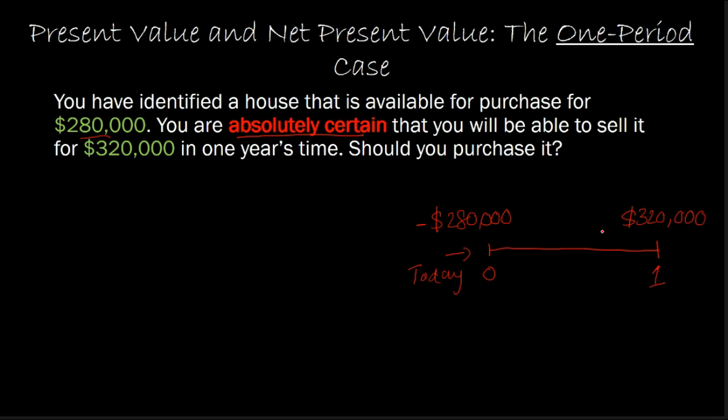Now, a very simplistic way of looking at it would be to say that's a $40,000 profit. If I sell my house for $320,000 one year from now and I'm only spending $280,000, that sounds like a good deal. But as we have talked about in the past, you never want to compare a cash flow that is occurring in the future with some cash flow that is happening today or at a different point in time because this simplistic scenario doesn't account for the opportunity cost.